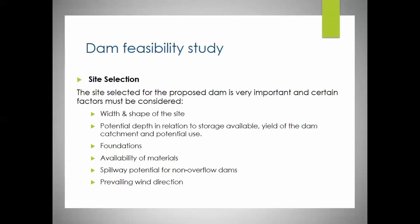For the dam feasibility study, the first step is site selection. The site selected for the purpose of a dam is very important and certain factors must be considered: the width and shape of the site, how deep it is, how wide the gap you need to cover, the potential depth, the foundations, the availability of materials - whether you can make an earth embankment or need concrete - a spillway potential for non-overflow dams, and the prevailing wind direction.